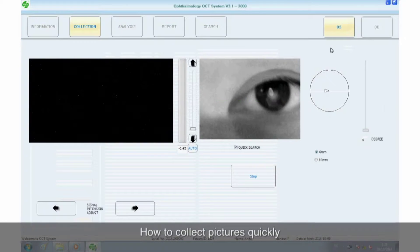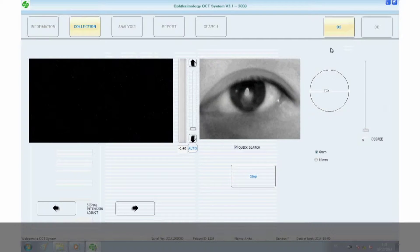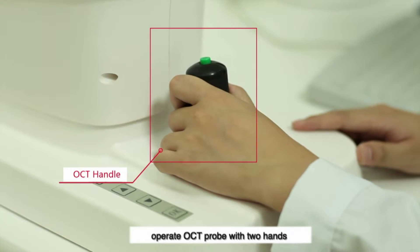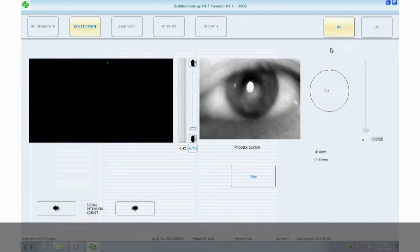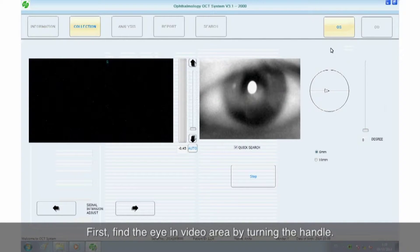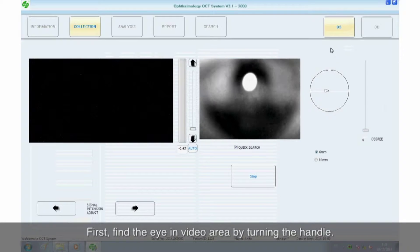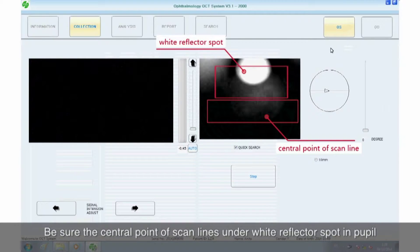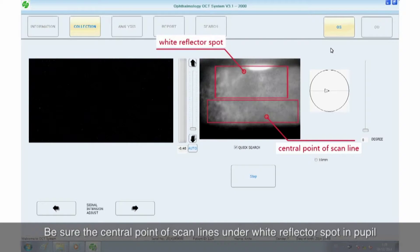How to collect pictures quickly. Step 1: Operate OCT probe with two hands. First, find the eye in video area by turning the handle. Be sure the central point of scan lines under white reflector spot in pupil.